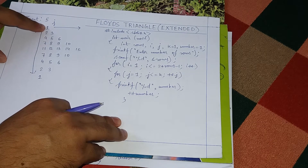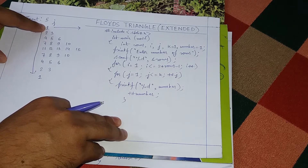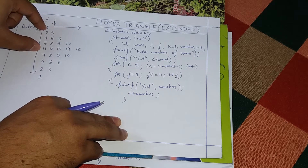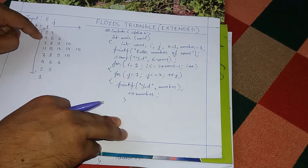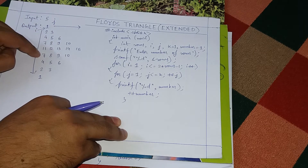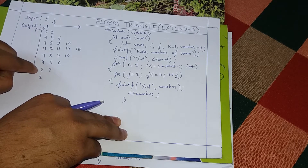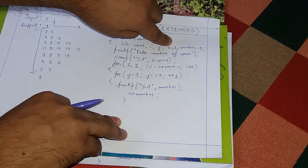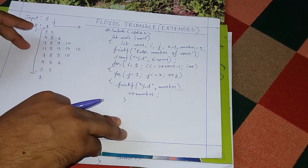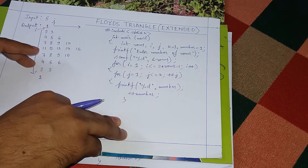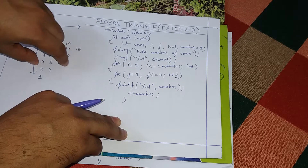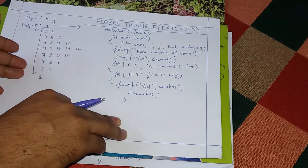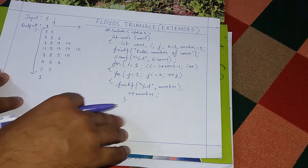Up to the mirror line the rows keep increasing: two elements, then three, then four, then five. After the mirror line the rows decrease: four elements, then three, then two. We handle this using variable k. We initialize k to one and keep incrementing it until we reach the mirror line, then start decrementing so we print one fewer element in each following row. That is why j is less than or equal to k.